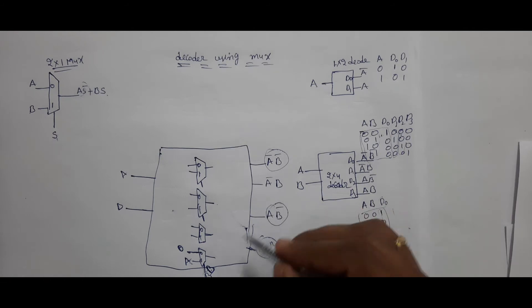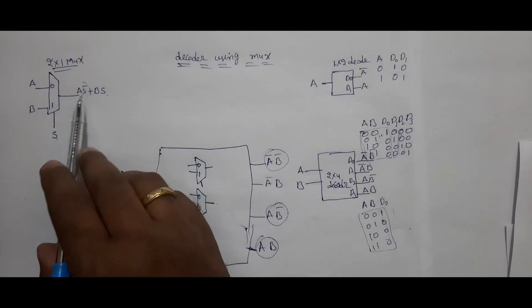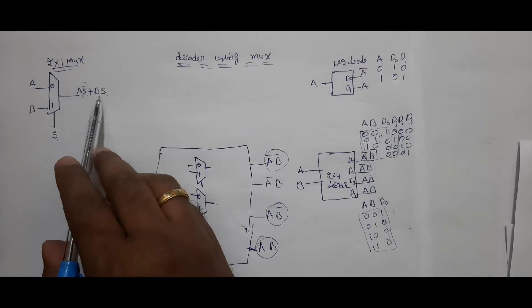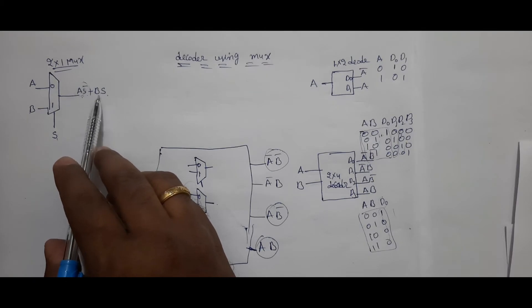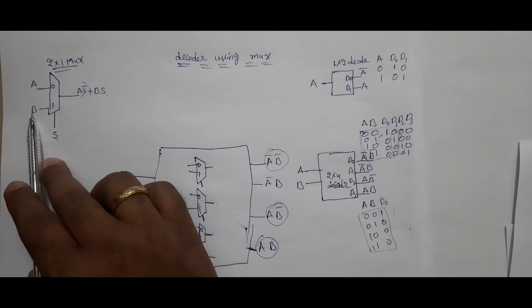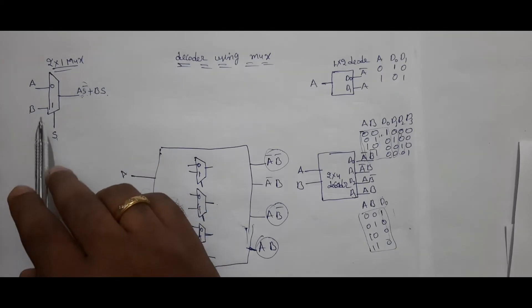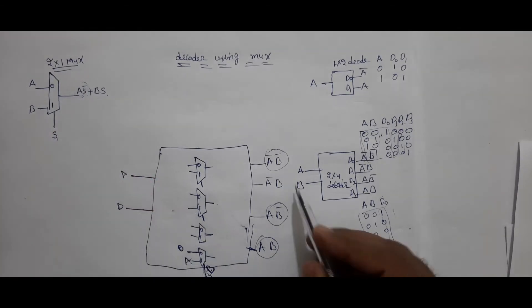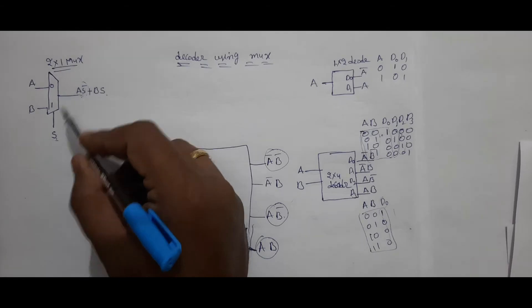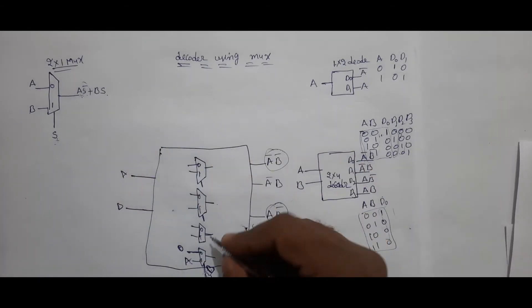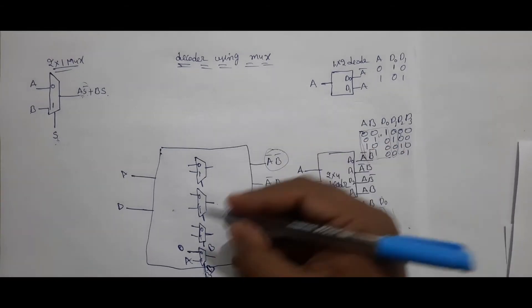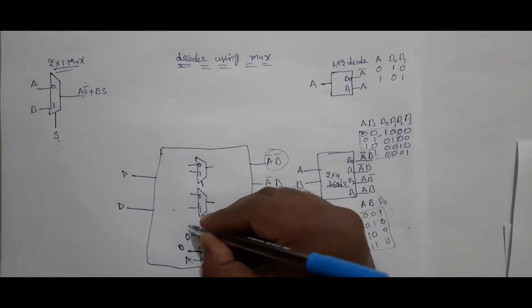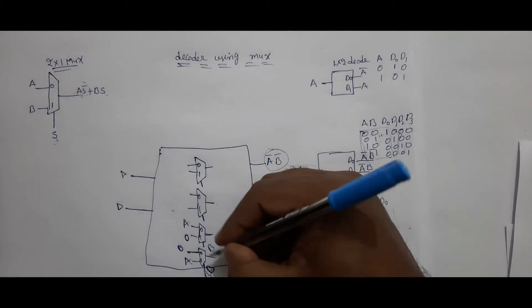Now how you will get A B-bar? There is A-bar here. This term needs to be 0. If I put B at position 0, then this term will go to 0. If I put A at S, A-bar is coming. You are getting B-bar, right? This is inverted. So keep B at the selection line, input 0 is 0, and input 1 is A. Don't interchange it.